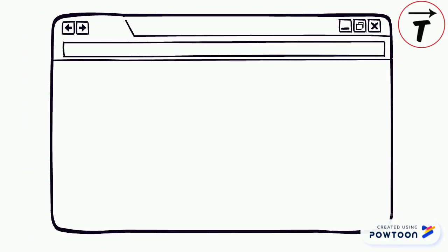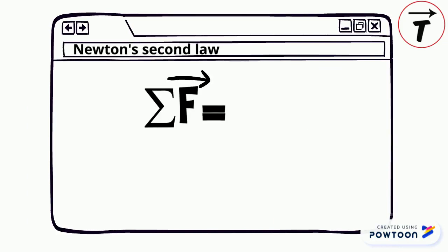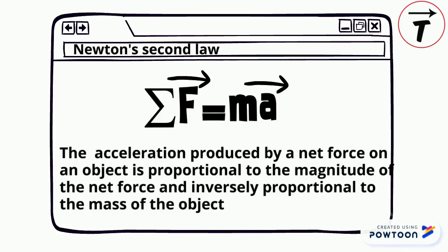Newton's second law of motion is expressed as: sum of forces equals mass times acceleration. The acceleration produced by a net force on an object is directly proportional to the magnitude of the net force and inversely proportional to the mass of the object.